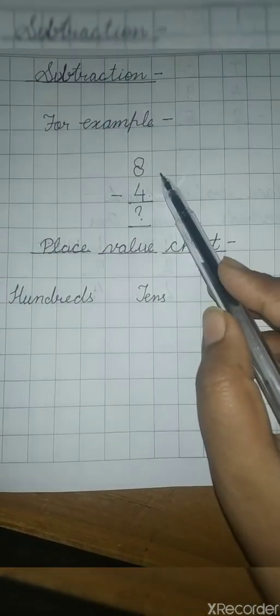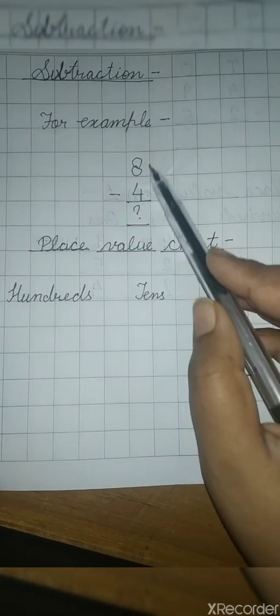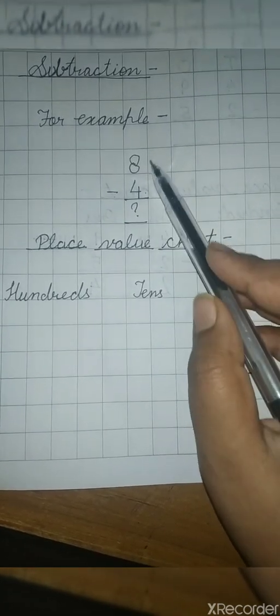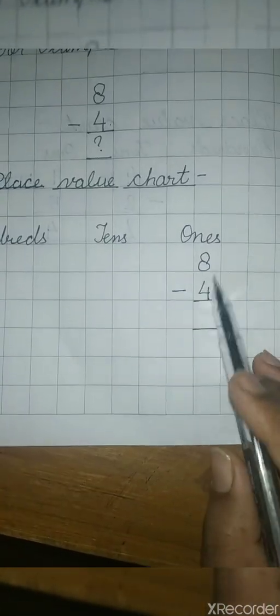You can see, students, this is a one-digit number subtraction, so you will write it in the ones place. Now you will write the numbers here: 8 and 4, and then you will put the symbol of subtraction.